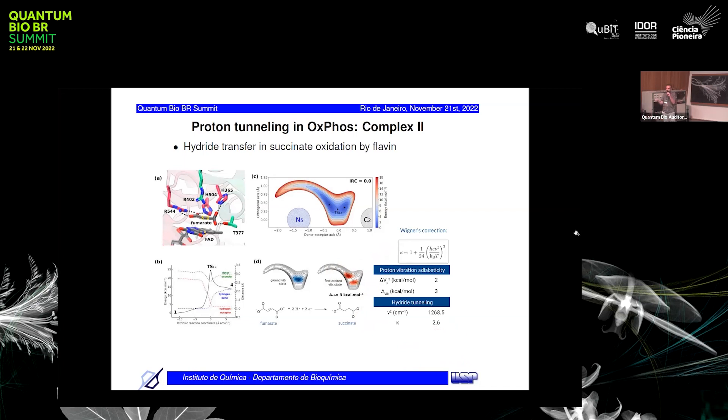When kappa equals one, there is transition state theory, there is no tunneling at all. But for this reaction, our kappa is 2.6, so there is some tunneling here, but it's small tunneling. The reaction will work but tunneling is not fully necessary here.